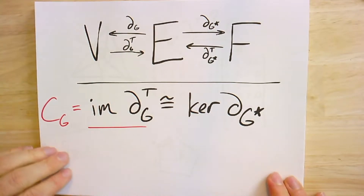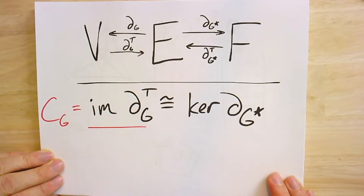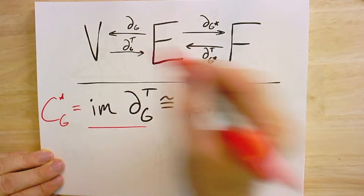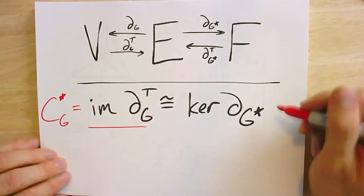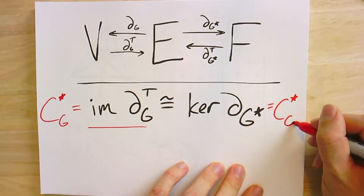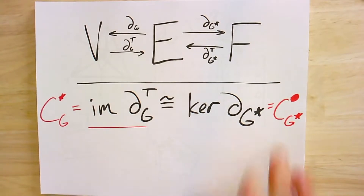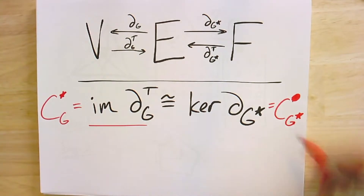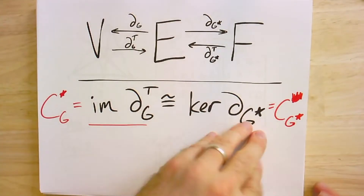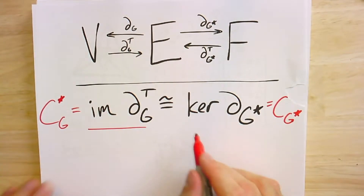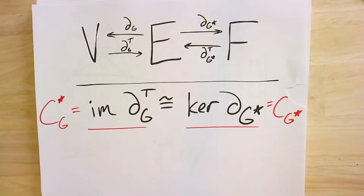Actually, let me get this right — it's supposed to be the cut space that is the image of the co-boundary. And that is isomorphic to the kernel of the boundary of the dual, which is the cycle space of the dual. So we have: the cut space of one graph is isomorphic to the cycle space of its dual and vice versa.